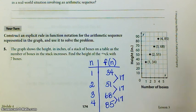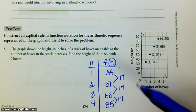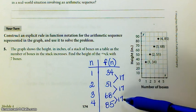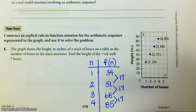So there's my table. I did mine vertically. You can do yours horizontally. It really doesn't make any difference. My f of 1 value is 34, and I'm noticing that my common difference, d, is 17.